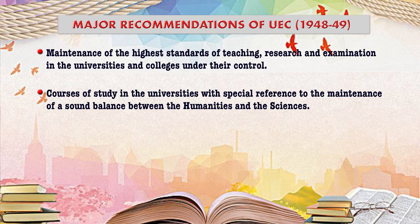Further, other recommendations include courses of study in universities with special reference to maintaining a sound balance between the humanities and science — how to maintain humanities-based and science-based disciplines in the university system — so that students will be attracted and motivated to study either in the science stream or in the humanities stream as per their own attitude and interest.